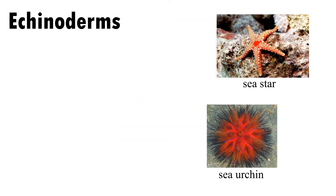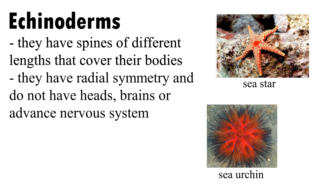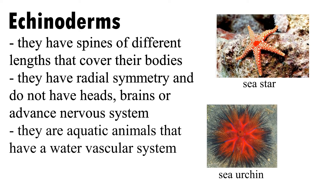Echinoderms have spines of different lengths that cover their bodies. They have radial symmetry and do not have heads, brains, or an advanced nervous system. They are aquatic animals that have a water vascular system.